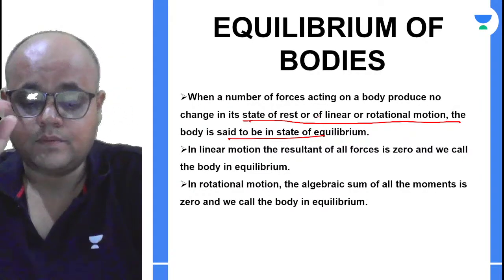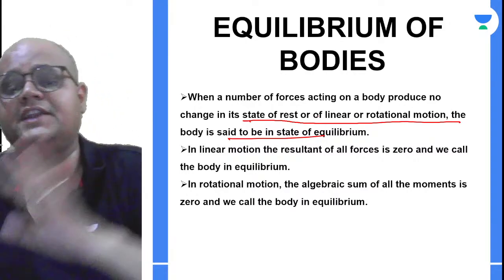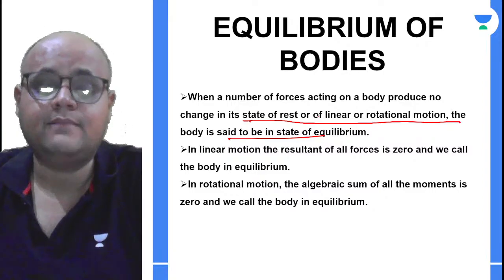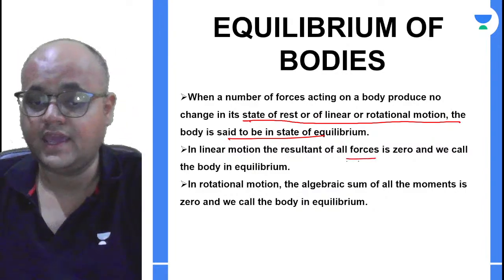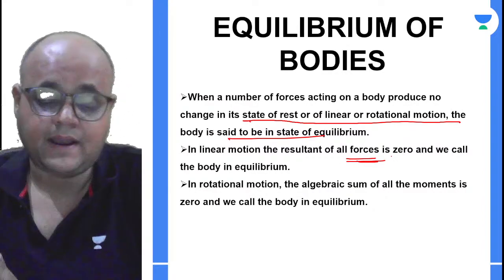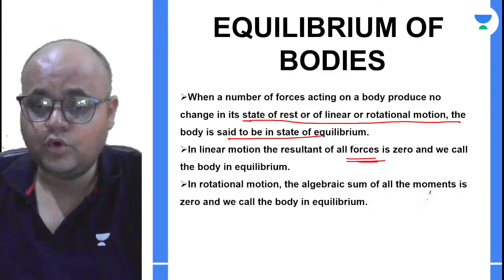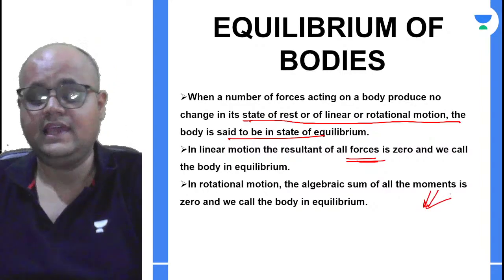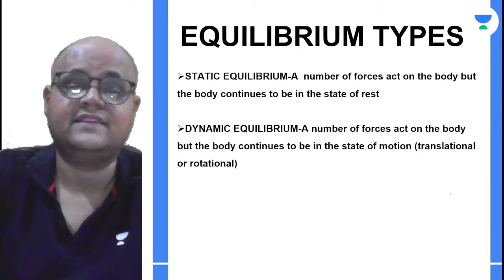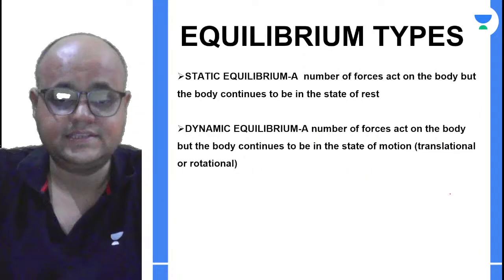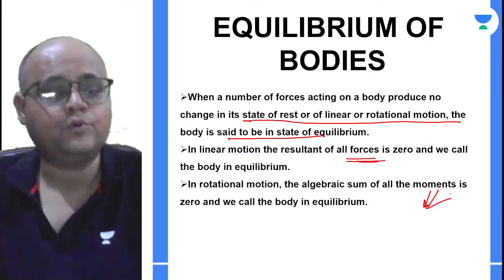In linear motion and in rotational motion, equilibrium is dealt with differently. In linear motion, we say the resultant of all forces is zero. But as soon as we move to the rotational part, we no longer talk about forces — we say if the net moment is zero, then the body is in equilibrium. A body in motion can also be in equilibrium if the net force is zero.